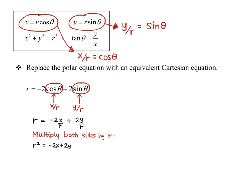We do have a direct identity for r squared: r squared is x squared plus y squared. So we'll have x squared plus y squared equals negative two x plus two y. Our equation is now in Cartesian coordinates — it only has x's and y's — but it's not in a form that we're used to or that we can picture the graph of.